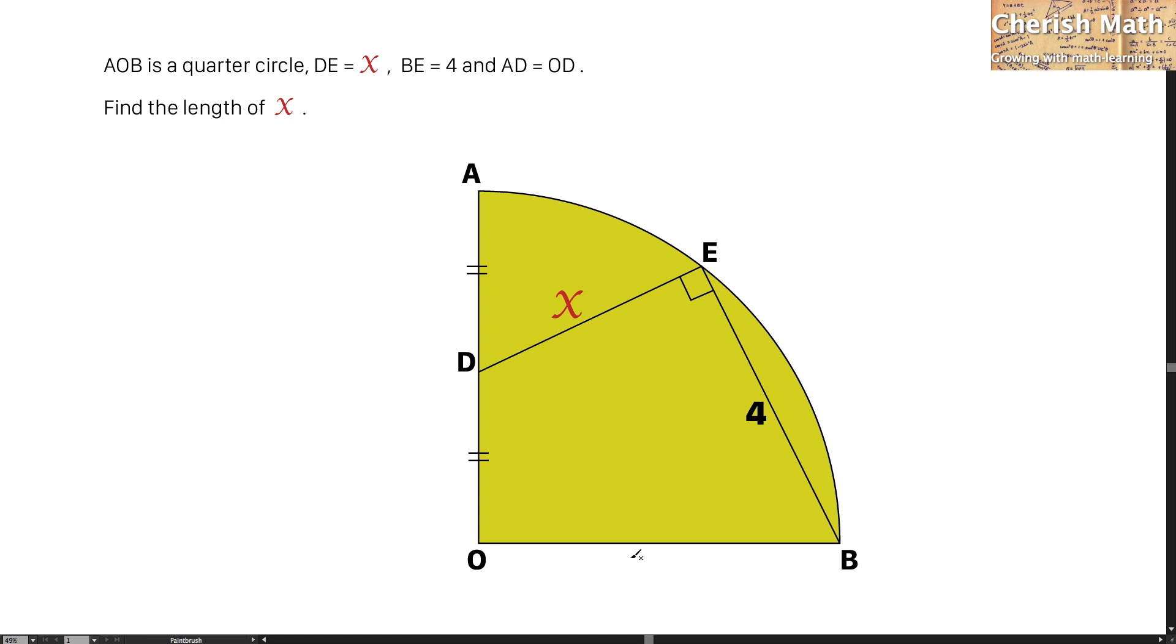Let's assume that the radius of this quarter circle to be R, and this part will be R over 2, and this is R over 2.